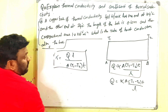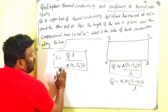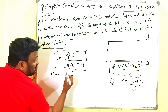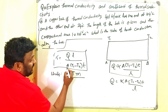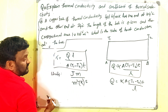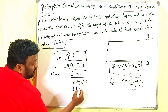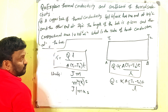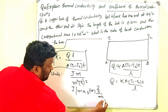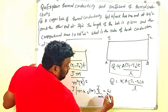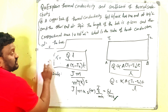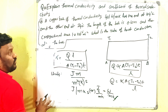Now we write the units for coefficient of thermal conductivity. Q is energy in joules, L is length in meters, A is area in meter squared, (T1 − T2) is temperature difference in kelvin, and t is time in seconds. Simplifying: joule × meter / (meter squared × kelvin × second) = joule / (meter × kelvin × second), which is also written as watt per meter kelvin. So the unit of coefficient of thermal conductivity is W m⁻¹ K⁻¹.